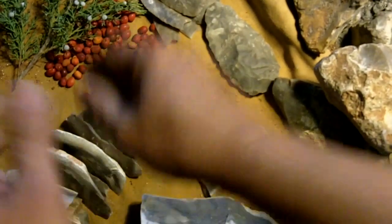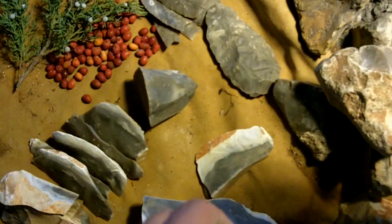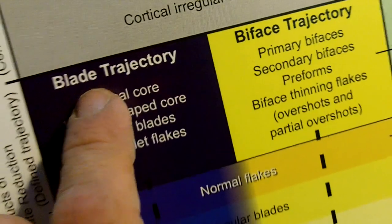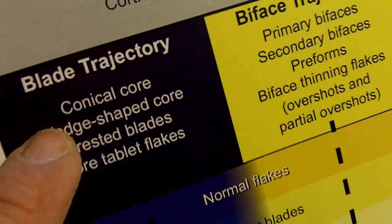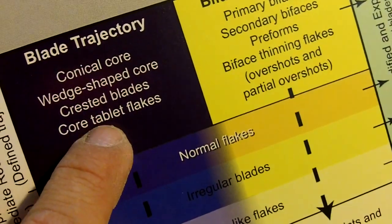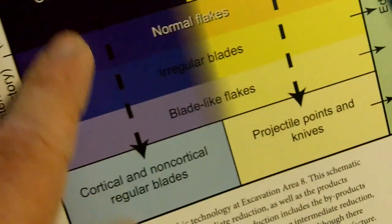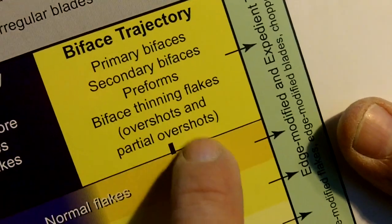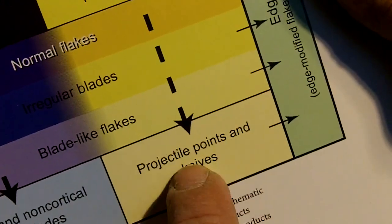Once they picked up an angular nodule at the quarry site, they would start breaking off blades, removing cortex, testing nodules, and picking their best pieces. Those pieces would follow different trajectories. Once it started as a blade it remained a blade; if you were the type of napper that made bifaces, they would stay as bifaces. Blades were removed from conical cores or wedge-shaped cores. This biface trajectory includes primary bifaces, secondary bifaces, preforms, etc., which became projectile points and knives.